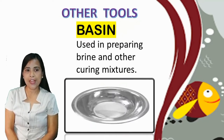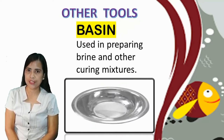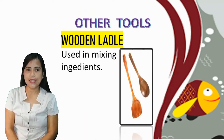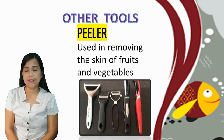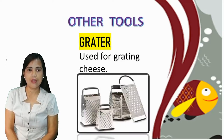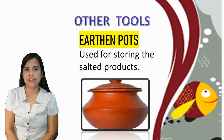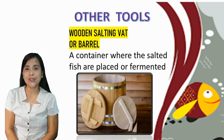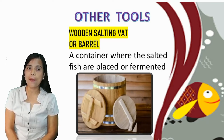Basin: used in preparing brine and other curing mixtures. Food tongs: used for lifting hot objects or food. Wooden ladle: used in mixing ingredients. Peeler: used in removing the skin of fruits and vegetables. Grater: used for grating cheese. Earthen pots: used for storing the salted products. Wooden salting vat or barrel: a container where the salted fish are placed or fermented.